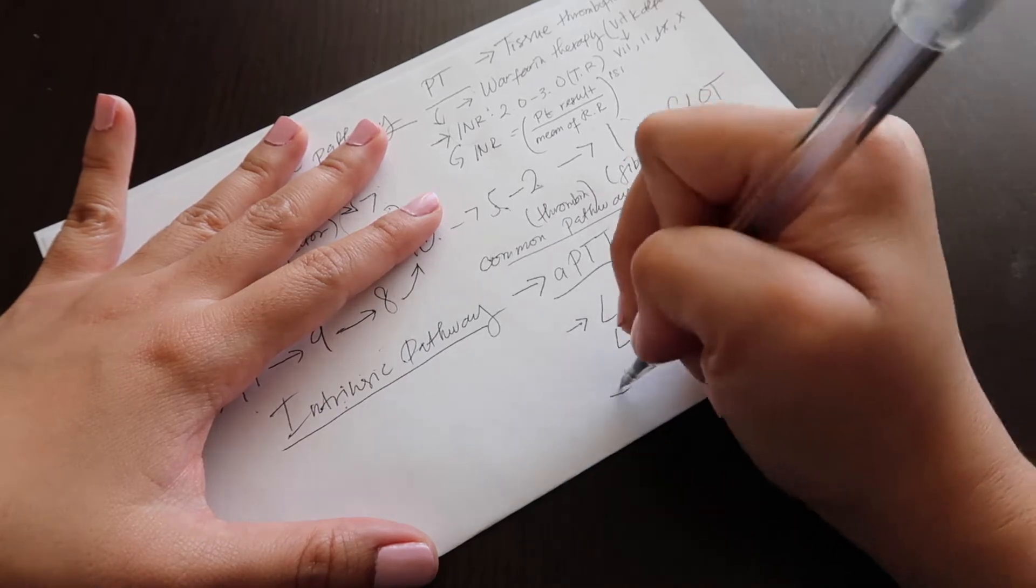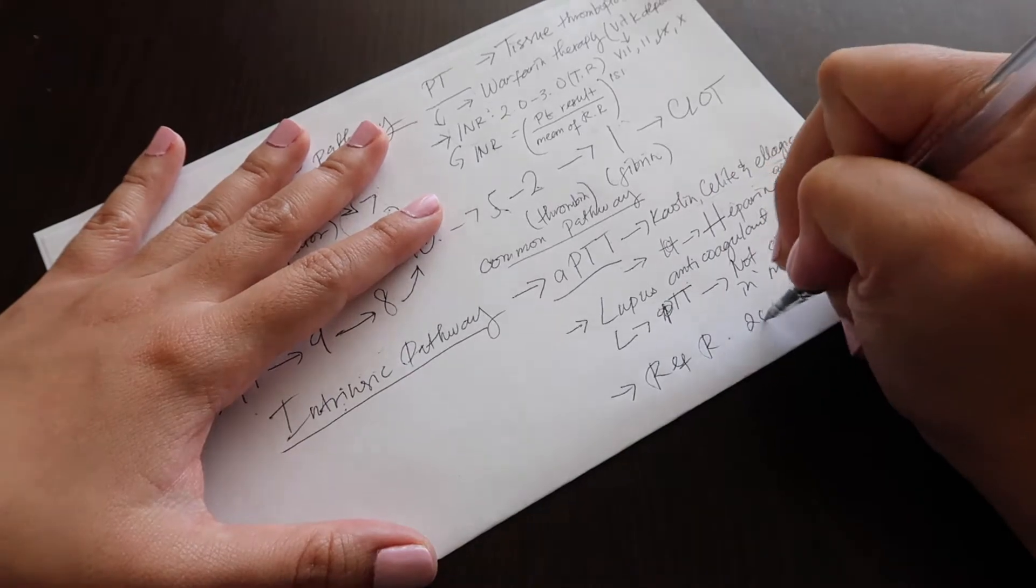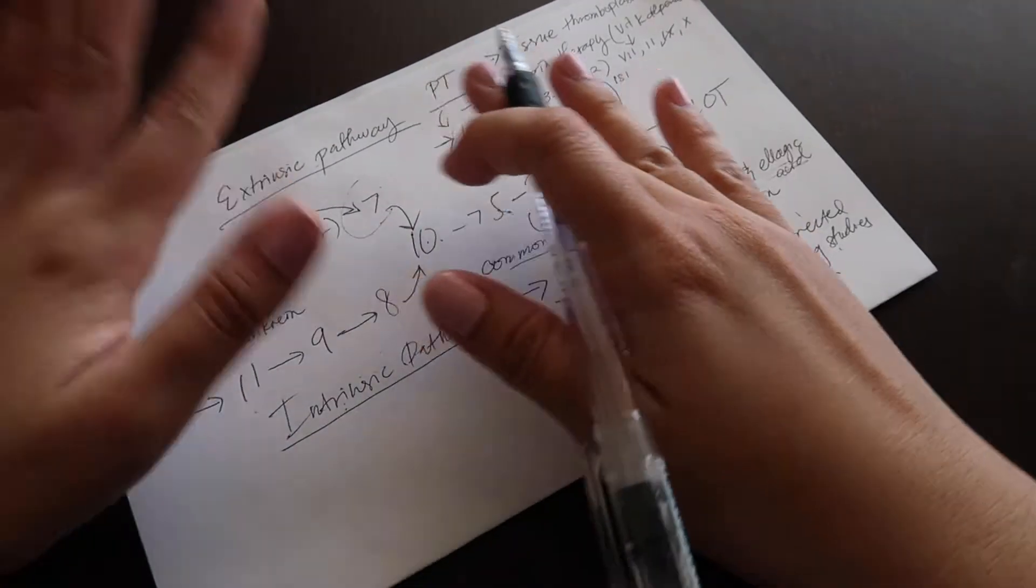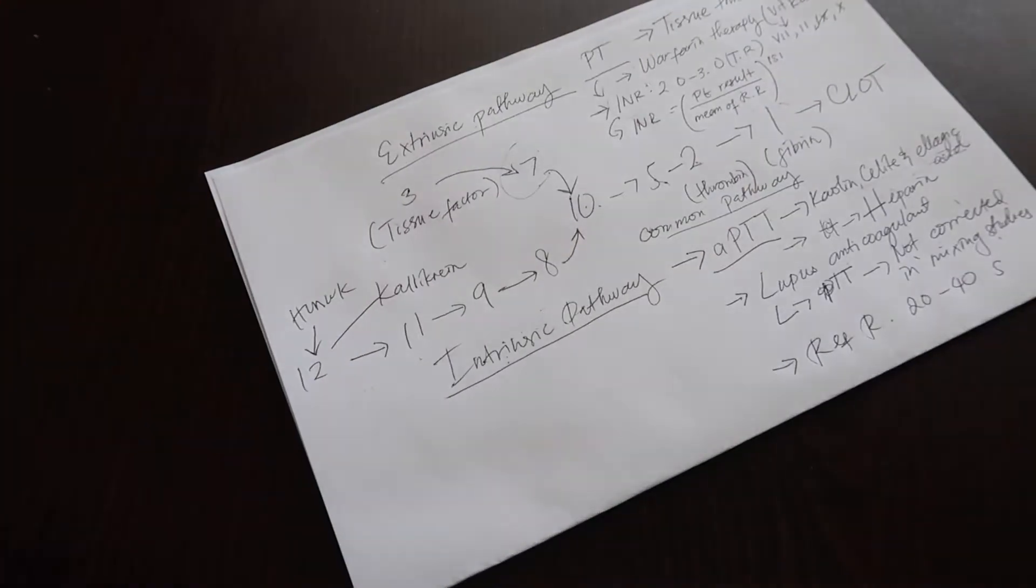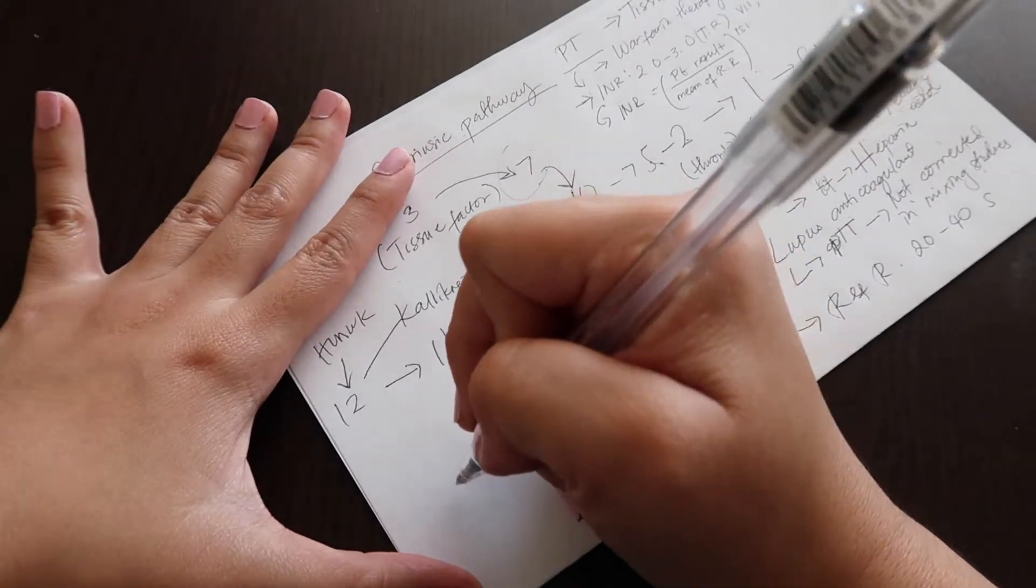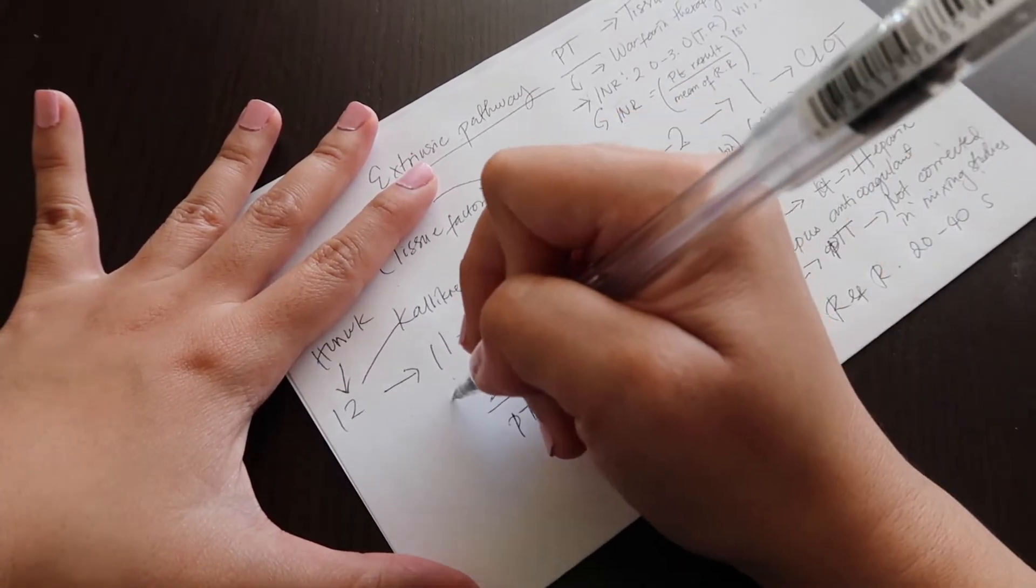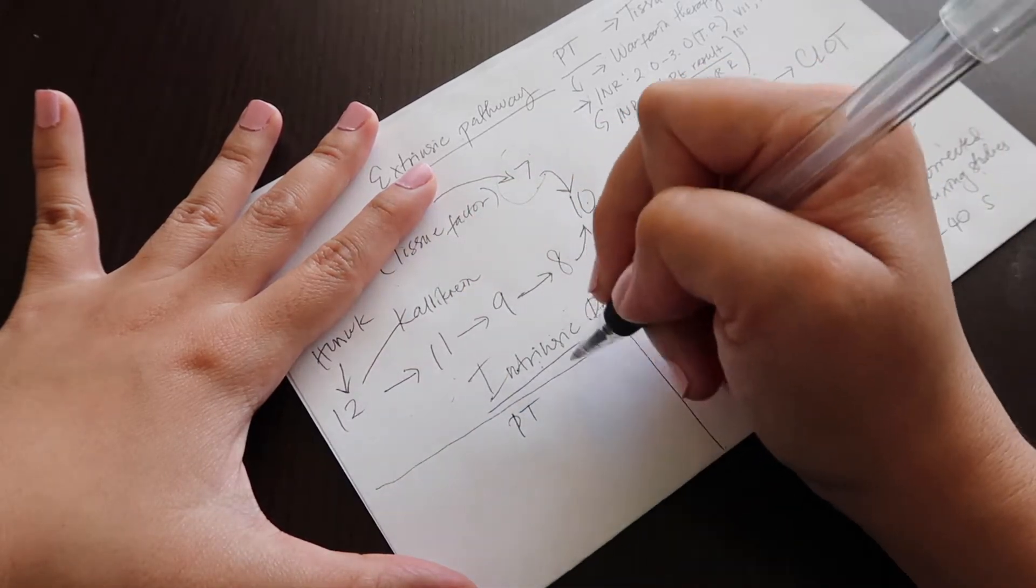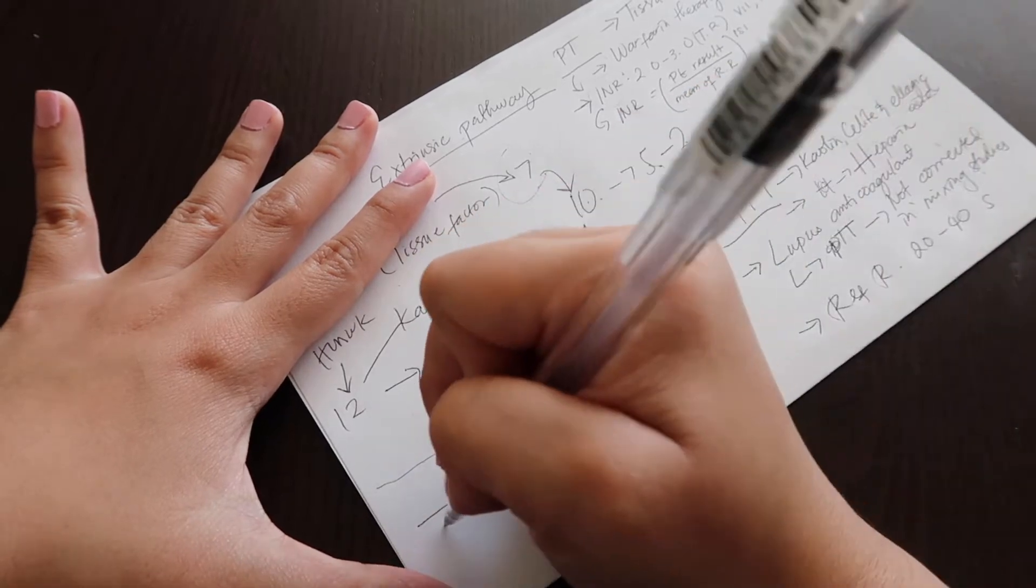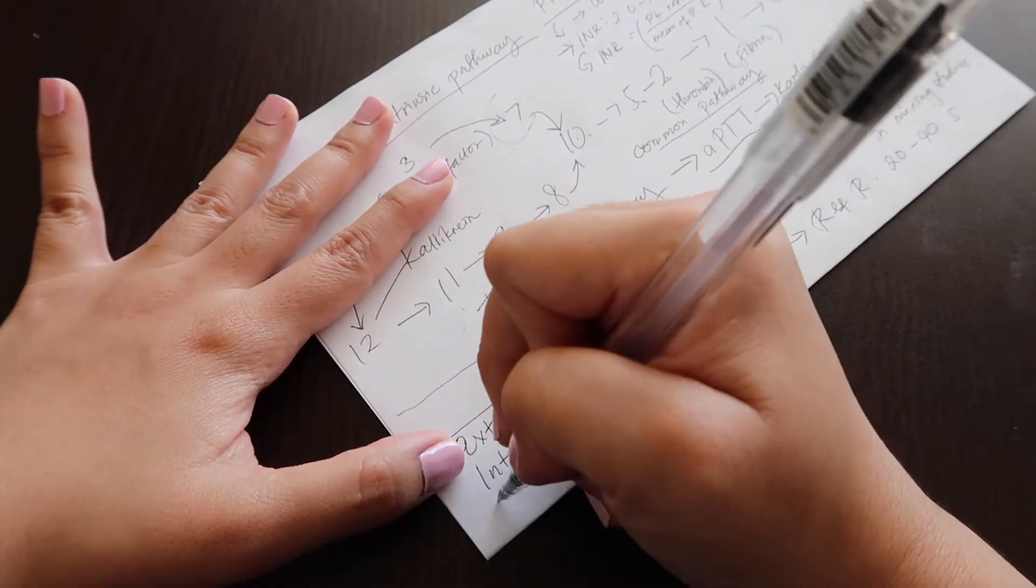And then reference range for PTT is 20 to 40 seconds. So we'll do a summary for what we just learned. We have PT, PTT. Extrinsic, intrinsic, and common pathway.